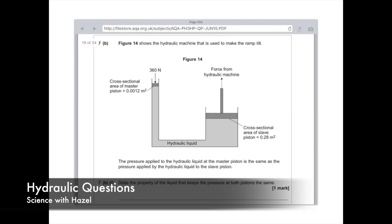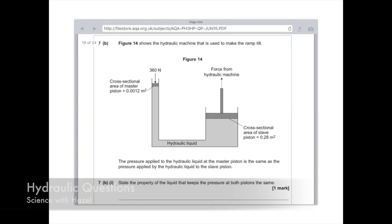Hi guys, I just wanted to go through a few hydraulic questions to see the sorts of answers you need to be putting in and how you're actually going to work out how to do them. Figure 14 shows the hydraulic machine that is used to make the ramp tilt. As with all hydraulic questions, you're going to have two pistons, they're going to have different areas and that enables them to create different forces.